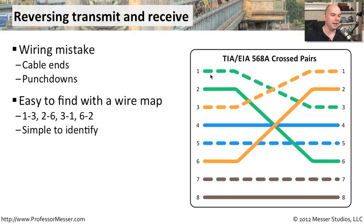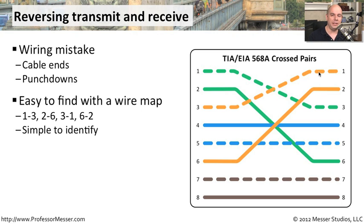If you look at one side, you have the green and white wire on number one, and you have the orange and white wire on the other side of number one. You know immediately that those are not a straight-through connection like you would expect. Unfortunately, you have wired the transmits to the receives and the receives to the transmits, and that becomes a little bit more of a challenge to troubleshoot.